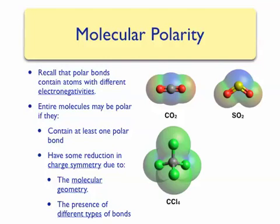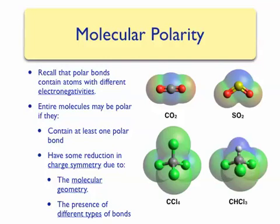However, if we replace one of the carbon-chlorine bonds with a carbon-hydrogen bond to make chloroform, CHCl3, we find that the polarity changes. Chloroform is a polar molecule. We've broken the charge symmetry by adding a different type of bond. Notice that one area of the molecule closest to the hydrogen is blue while the other areas are green, indicating an asymmetry in the charge distribution.